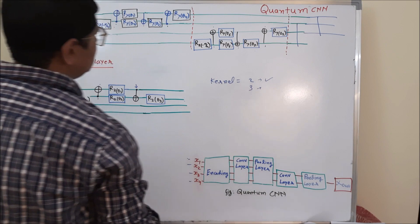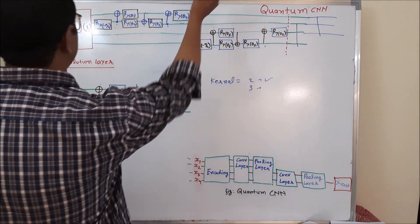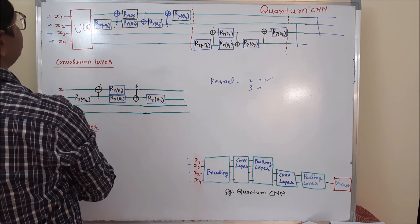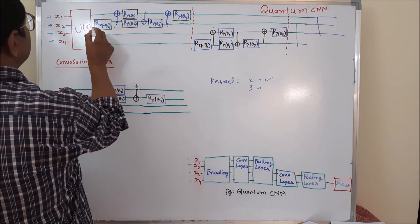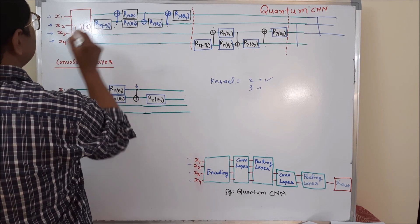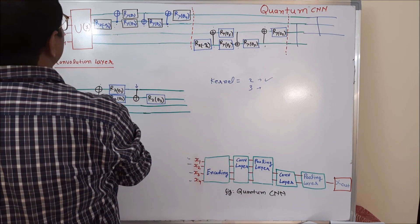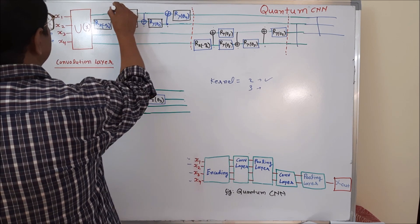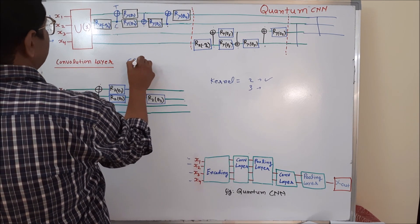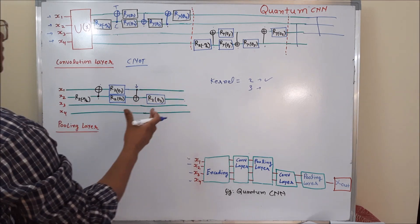Suppose we take the 2-qubit size kernels in the convolution layer in the context of quantum CNN. First of all, we select x1 and x2. For x1 and x2, we rotate the encoded x2 output by minus pi by 2 angle through the z-axis. After that, I applied the entanglement. In this entanglement, this is the control and this is the target. The entanglement value will be calculated using the CX gate. I had clearly explained what is the CX gate and its properties in the previous lectures.